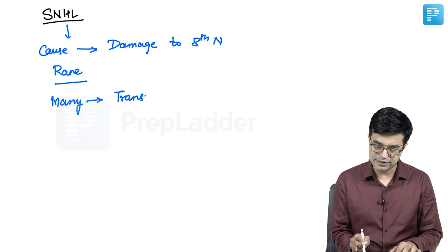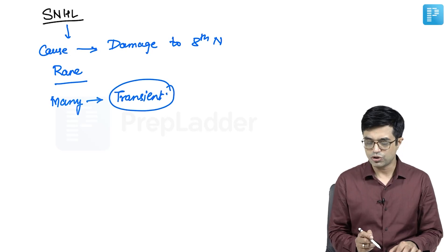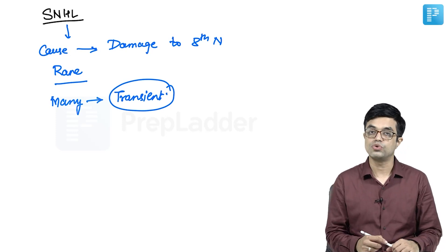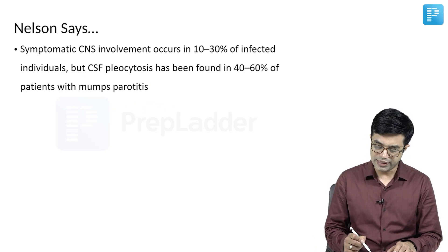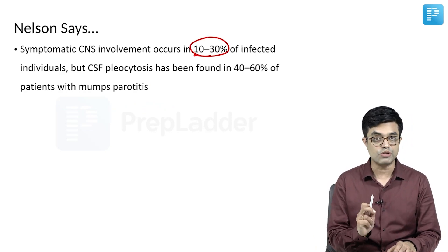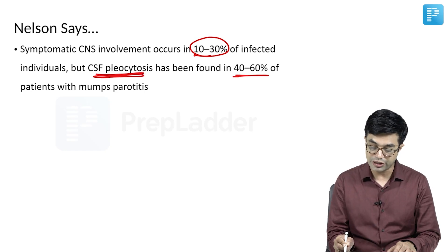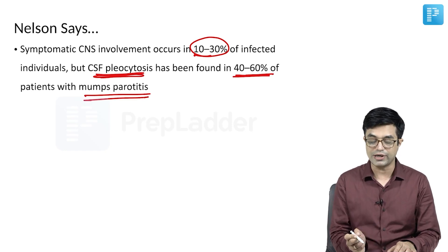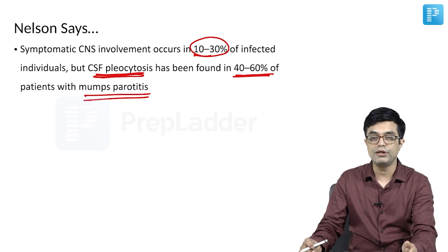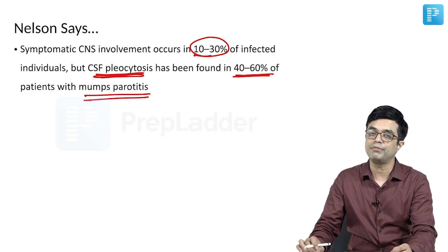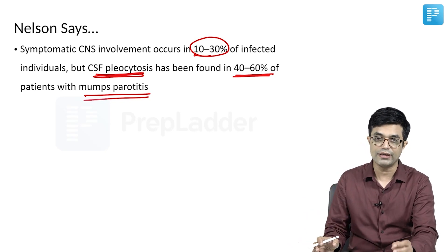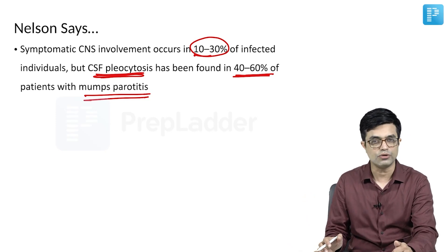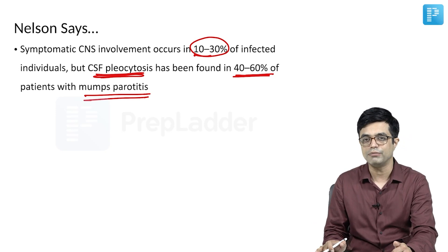There is a transient sensorineural hearing loss, and in most of these patients it tends to improve with age. It is often unilateral rather than bilateral. Nelson states that symptomatic CNS involvement occurs in 10 to 30% of infected individuals, but CSF pleocytosis is found in 40 to 60% of patients with mumps parotitis — and pleocytosis has been shown to occur even in asymptomatic patients. So a significant number with parotid swelling will have some degree of CSF pleocytosis, though not sufficient to be called aseptic meningitis.